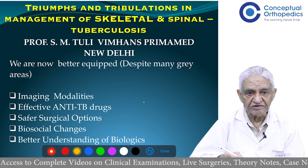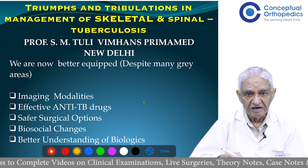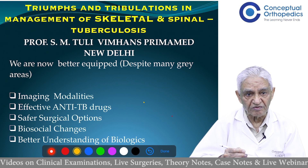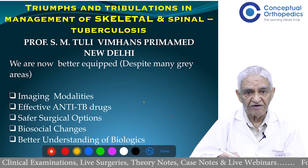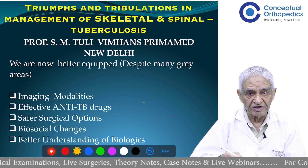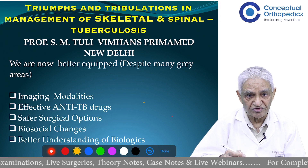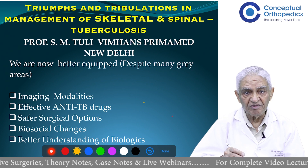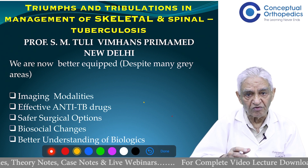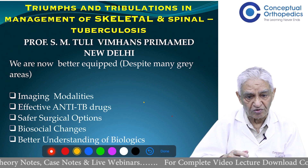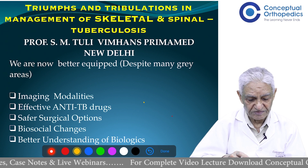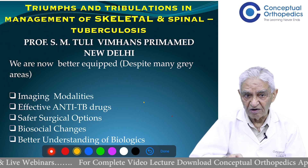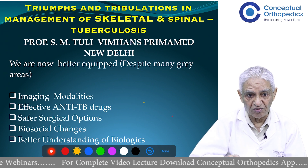Tuberculosis of the skeletal system — roughly 3% of all patients of tuberculosis have tuberculosis in the bones, joints and spine. Today we will be confining essentially to the tuberculosis of the joints. Over the years we have many advances available to us.